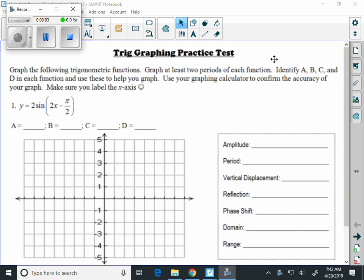Graph the following trigonometric functions. Graph at least two periods of each function. Identify A, B, C, and D in each function and use these to help your graph. Use your graphing calculator to confirm the accuracy of your graph. Make sure that you label the x-axis.